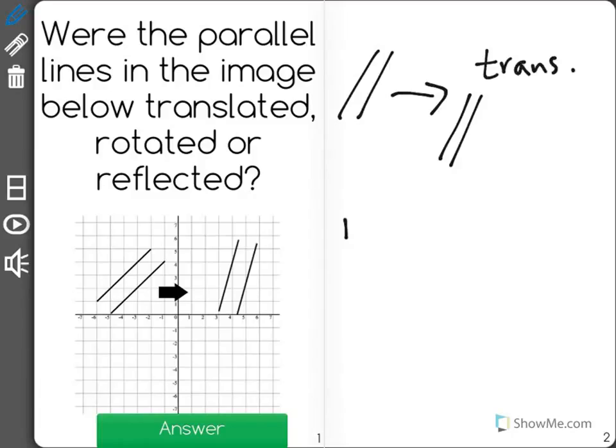A rotation is when we have two parallel lines and they end up turning some way. Maybe they could turn back this way. That would be a rotation.